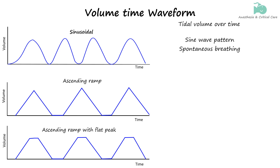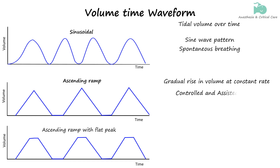An ascending ramp waveform, on the other hand, is characterized by a straight or slightly curved line that increases at a constant rate over time. This pattern represents a gradual increase in volume delivery, which is typically seen in controlled mechanical ventilation modes. The ascending ramp suggests that the ventilator is delivering volume at a steady, continuous rate until the target tidal volume is reached, giving the waveform its typical mountain peak appearance.